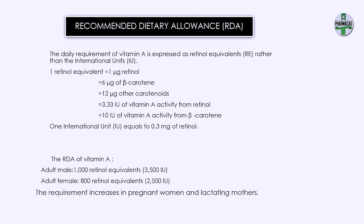The daily requirement of vitamin A is expressed in terms of retinol equivalents, not international units. One retinol equivalent means one microgram of retinol or six micrograms of beta carotene. One international unit equals 0.3 micrograms of retinol, but requirements are expressed in retinol equivalents only. The RDA (recommended dietary allowance) of vitamin A for adult males is 1000 retinol equivalents, and for adult females it is 800 retinol equivalents. This RDA increases for pregnant women and lactating mothers.